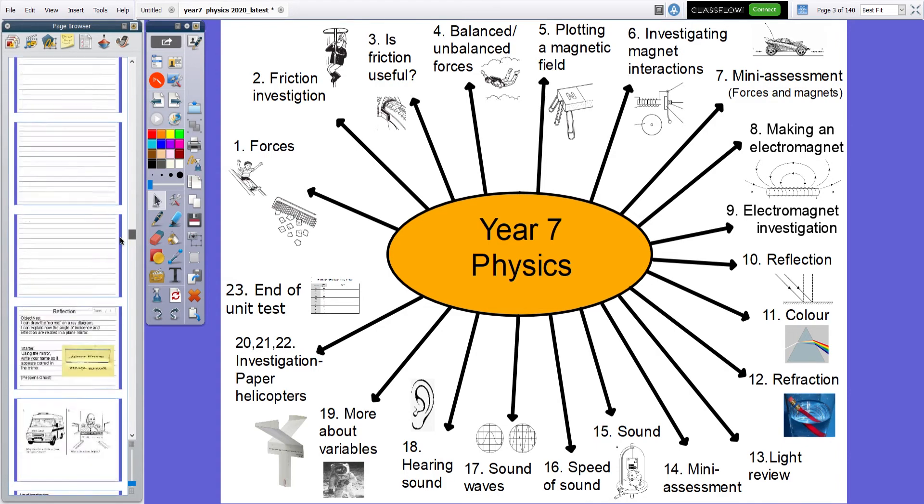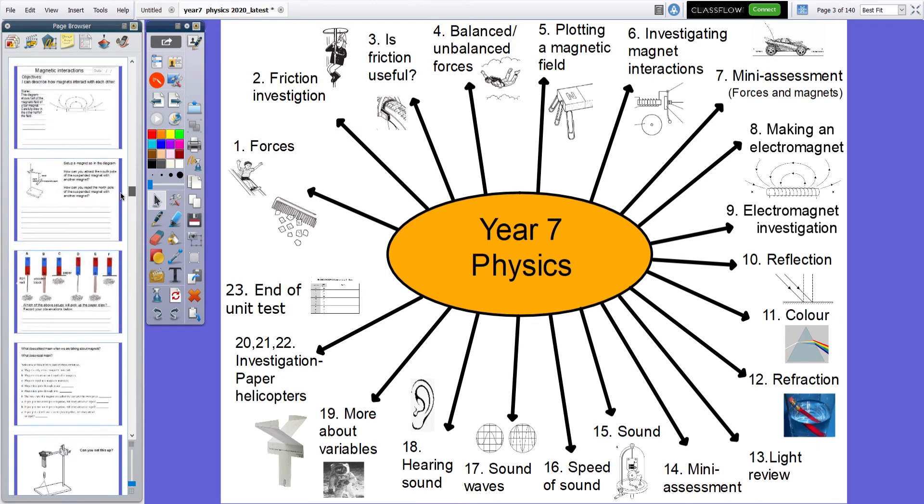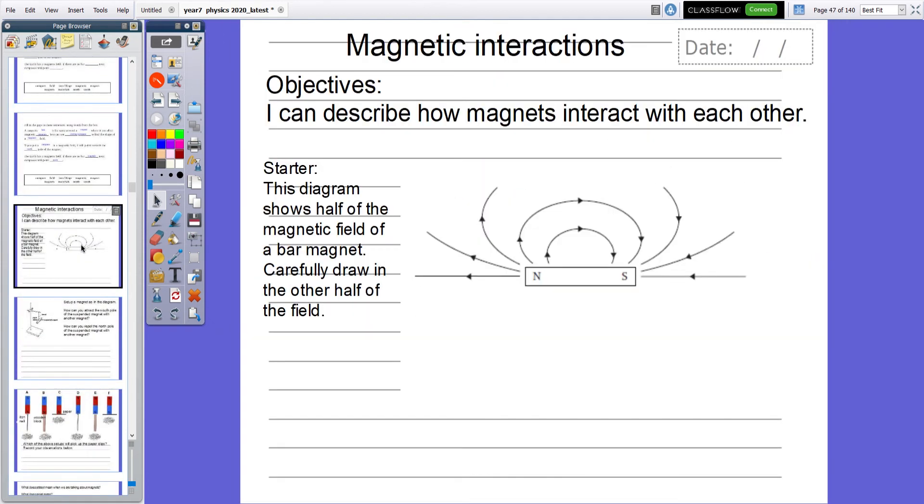Please have a go at doing the starter here, by referring to your work from previous lesson. The objective is, I can describe how magnets interact with each other. And here's the starter. This diagram shows half the magnetic field of a bar magnet. Draw carefully in the other half.